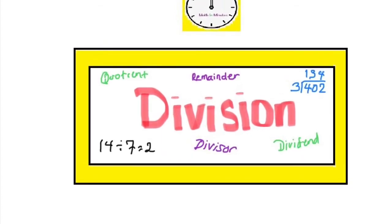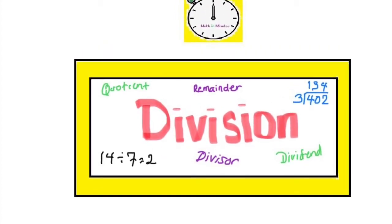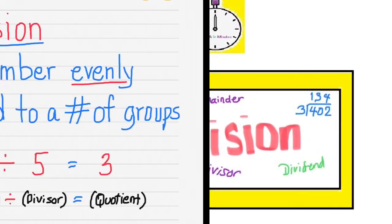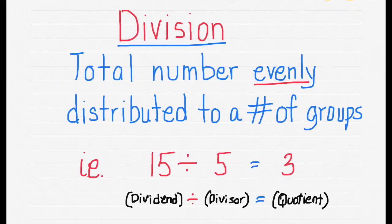This video is on division, basic and long division. Division is taking a total number of a certain quantity and evenly distributing it to a number of groups. In technical terms, you are taking the dividend divided by the divisor and your result will be the quotient.